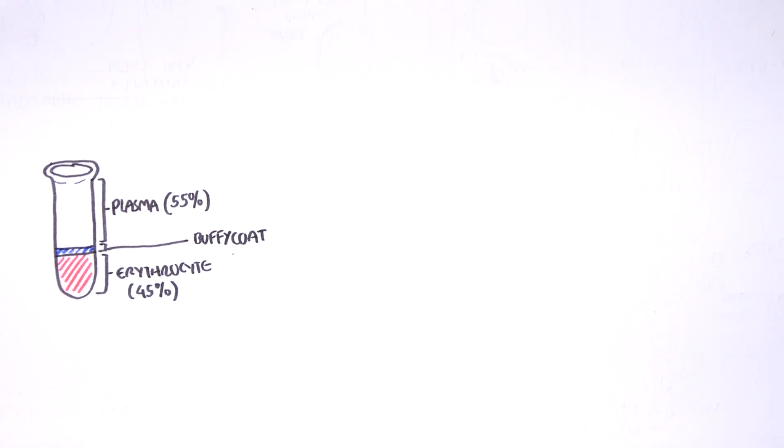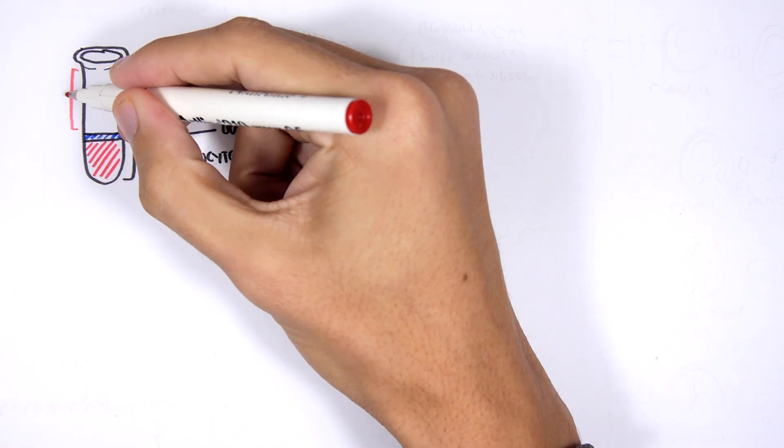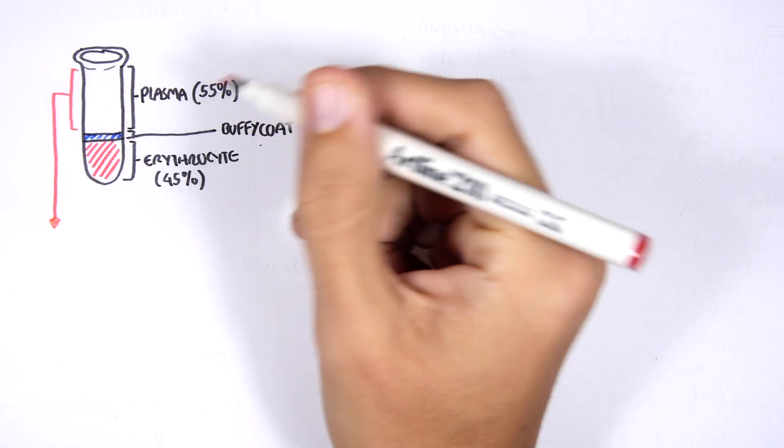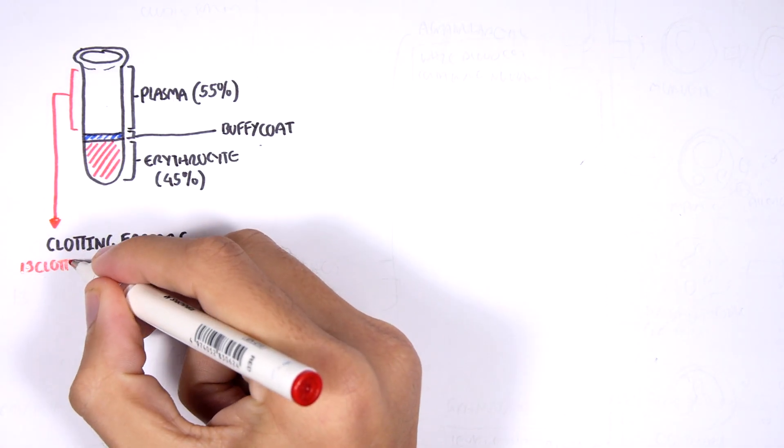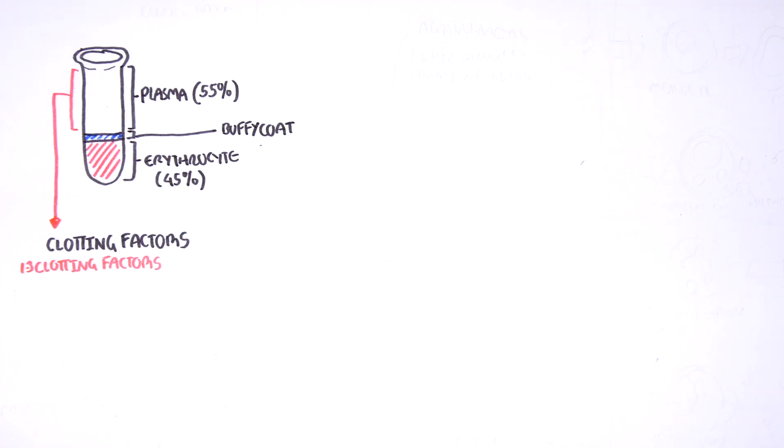Within the plasma, the plasma is not only water, it also contains other substances such as clotting factors. And we have 13 clotting factors which help us in forming clots and maintaining hemostasis.